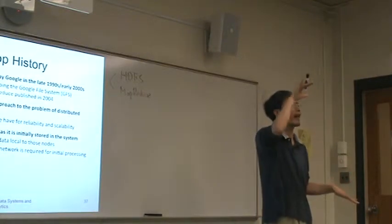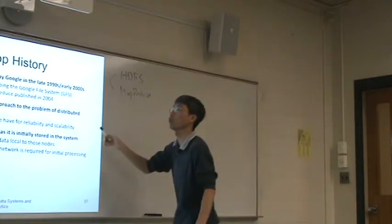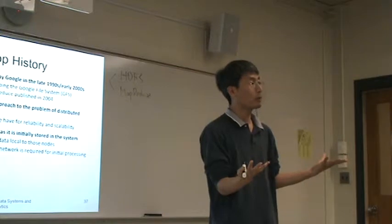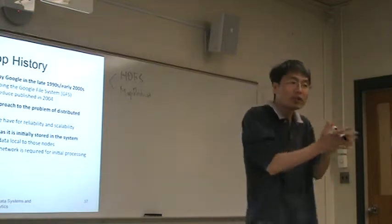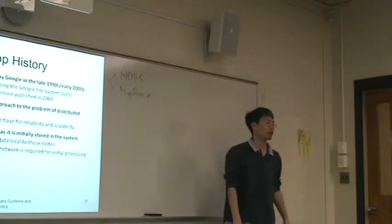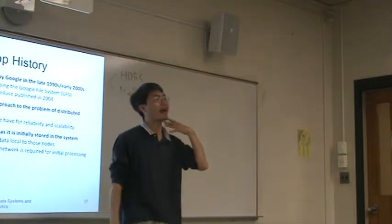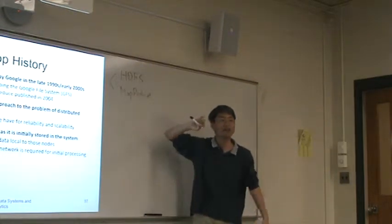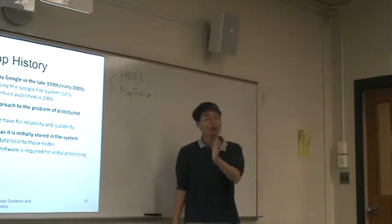MapReduce is a very high-level, distributed, and parallel programming system. Even though you do not know how many nodes you have, or how the data are distributed, don't worry about it. You can just code: read this data, find, count the number of words — then the MapReduce system will take care of everything. It's a very high-level abstraction. So when we say Hadoop system or big data system, that means HDFS file system plus the MapReduce system.